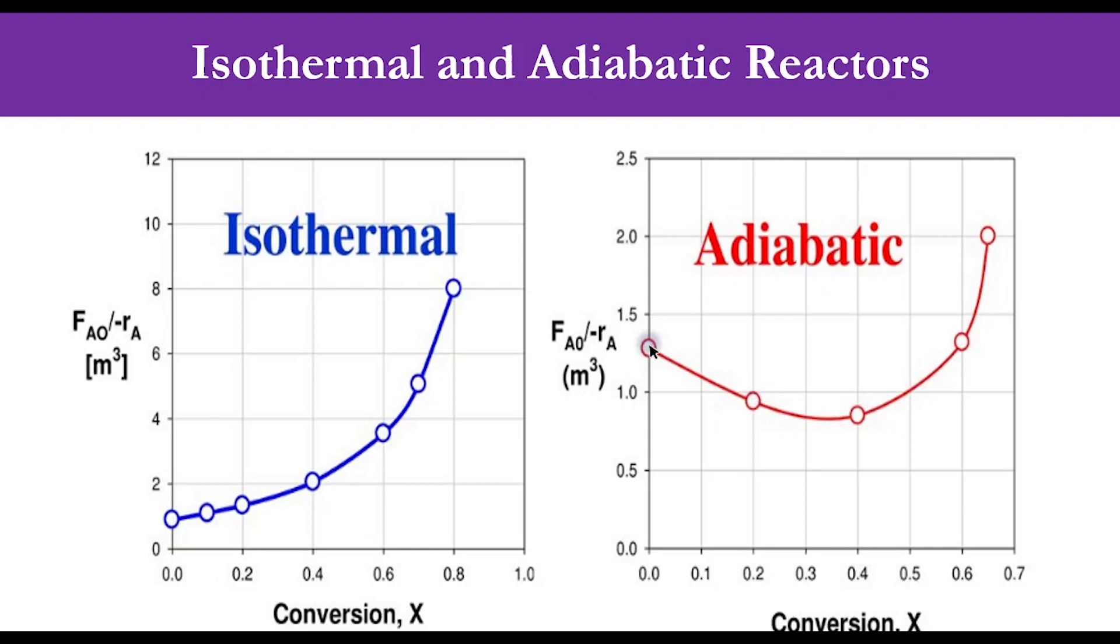However, as the reaction proceeds, the rate eventually decreases as conversion increases and reactants are consumed. Initially the rate increases so this value decreases, and after some time the rate decreases because reactants are consumed, so this value increases. We can see these two competing effects that give the bowed curve for the adiabatic system. We will solve further examples related to adiabatic in our upcoming lecture.